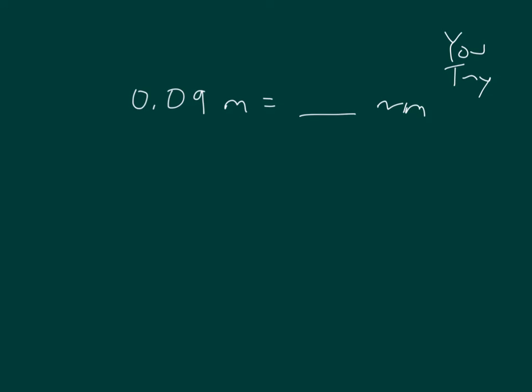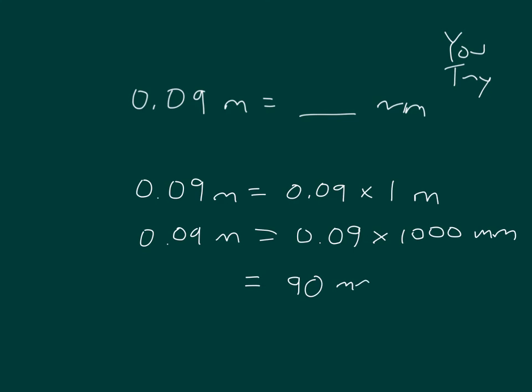Here's one for you. Pause the video while you do your work. Make sure you show all your work. 0.09 meters equals 0.09 times 1 meter, and so we have that equals 0.09 times 1,000 millimeters, which equals 90 millimeters. Shift the decimal place three places: 1, 2, and 3. That's how I got to 90 millimeters.